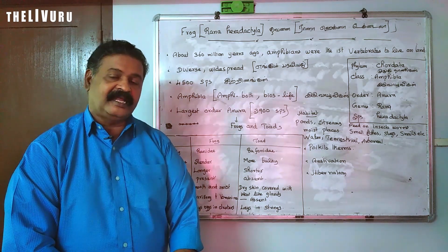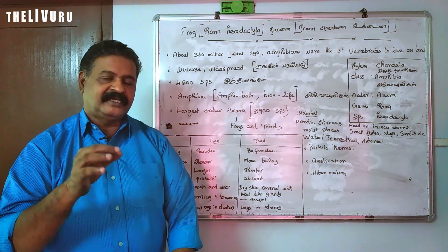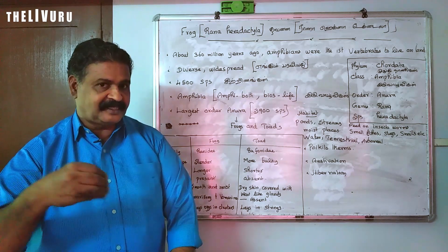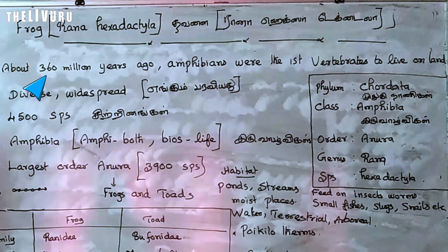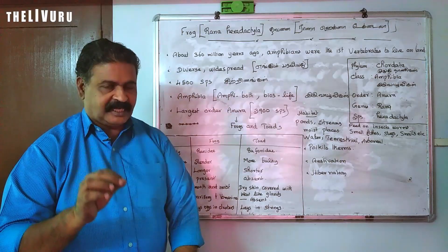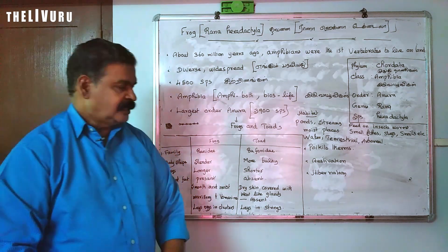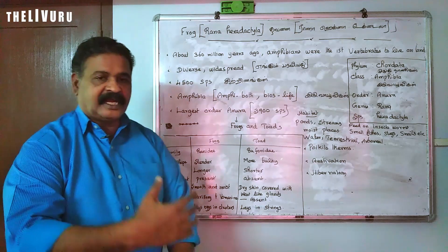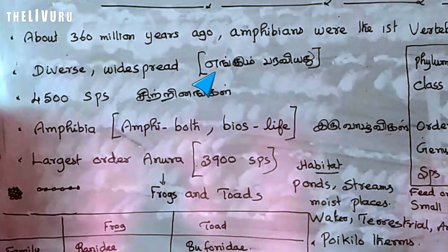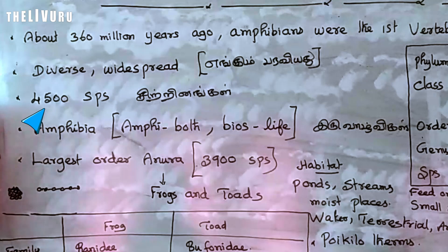Amphibia belongs to many animals — it's not fully land, it's fully aquatic as well. About 360 million years ago, amphibians were the first vertebrates to live on land.